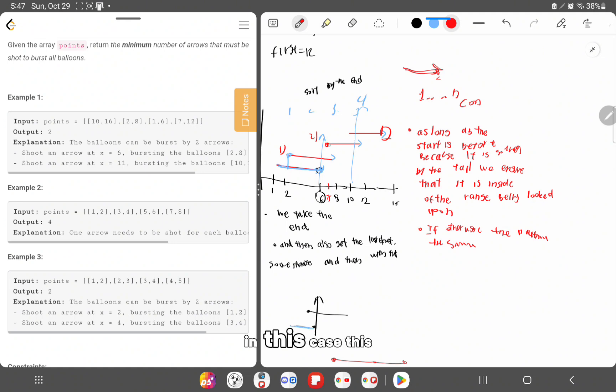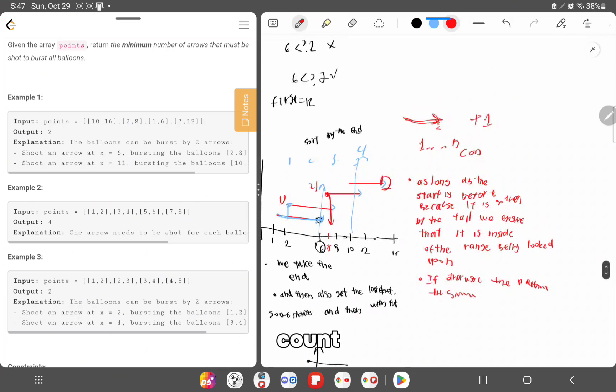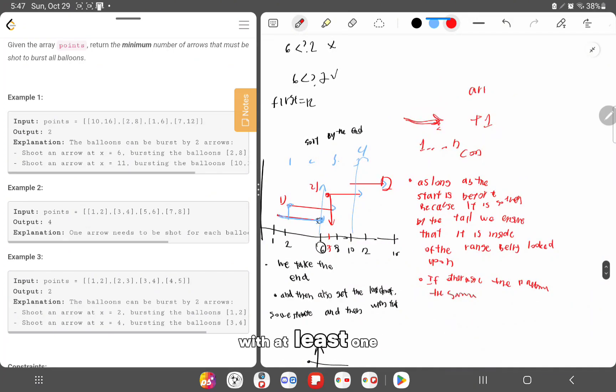And if it's more, in this case this is more, this will be more than the range. Then it means that we add plus one to our arrows. The arrows count, we have to start with at least one arrow. So if we start with arrow equals one.